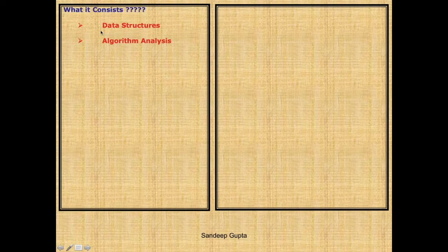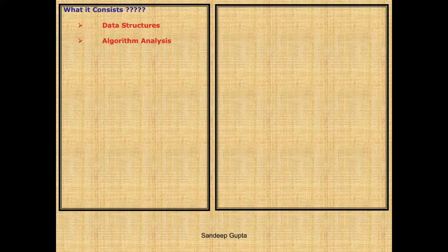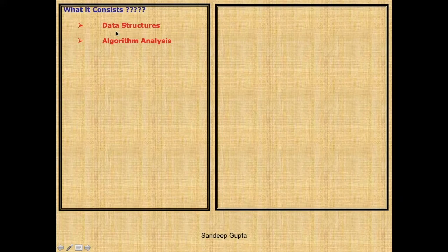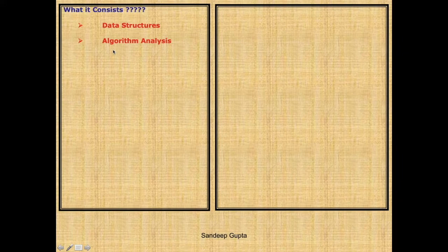Please follow this mouse pointer throughout the video. Anything which stores data is called a Data Structure. If you understood what I said, can you give me one example of a Data Structure you have already studied in C language? Yes, that's right — it's Array. An Array is also a Data Structure, but it is the simplest one. In this syllabus, we will be studying far more complex and important Data Structures.